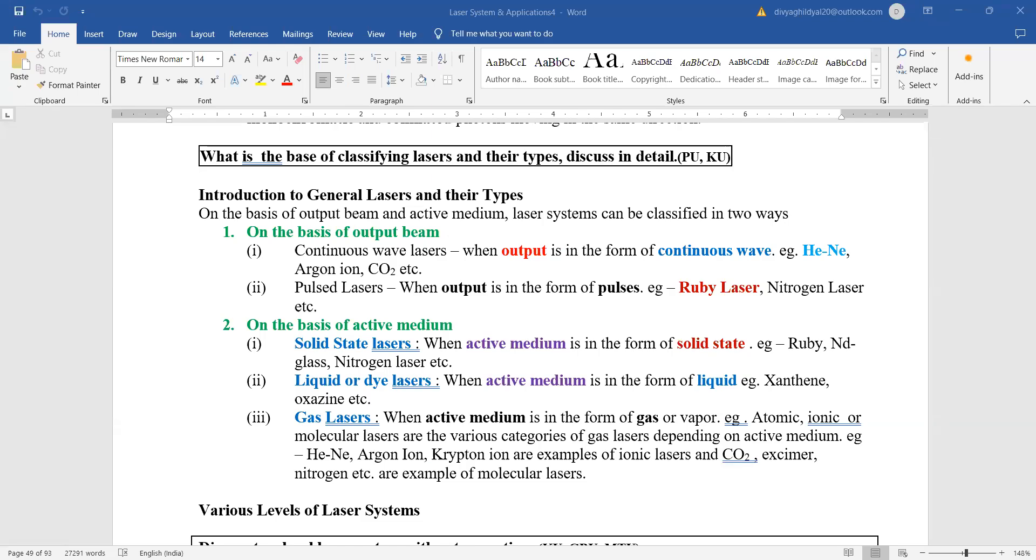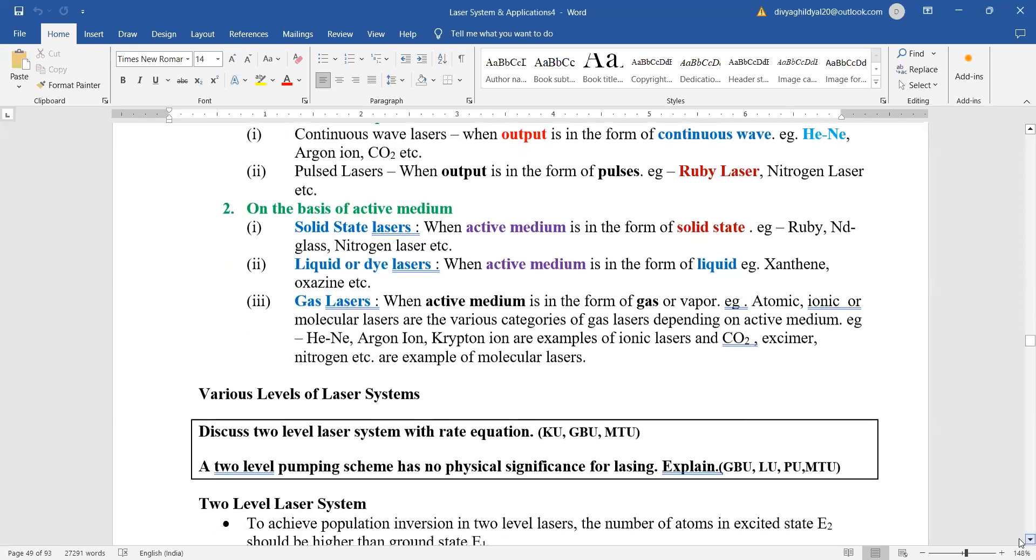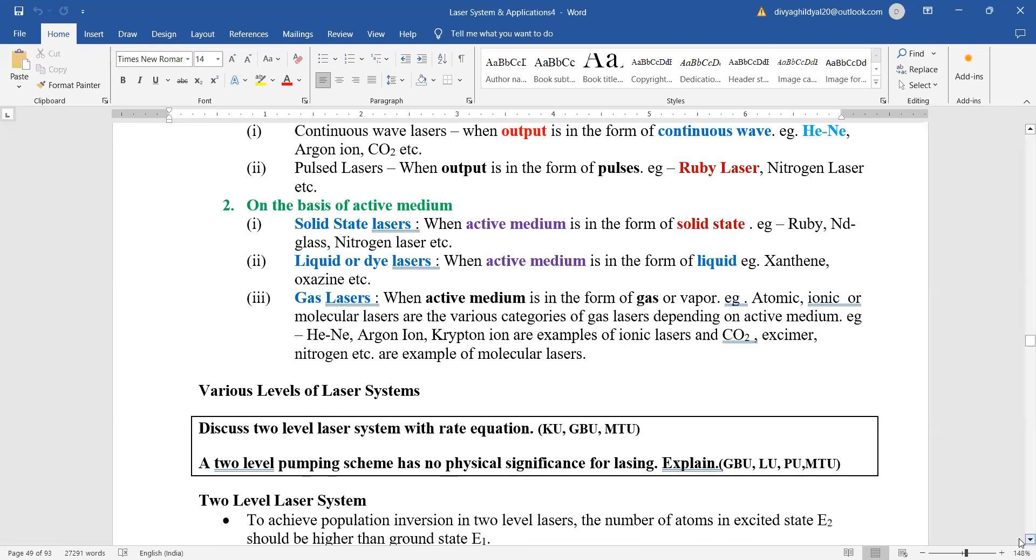Hello students, continuing with our lecture for the third unit on laser components. Let us continue from the previous lecture. We covered the principle of laser action, which is stimulated emission of radiation. Laser outputs are two types: continuous and pulsed ones.